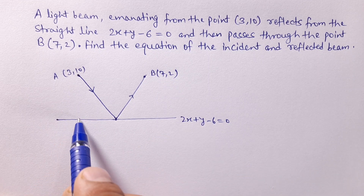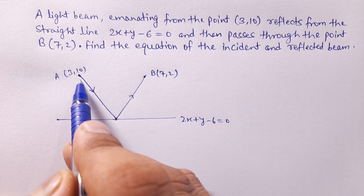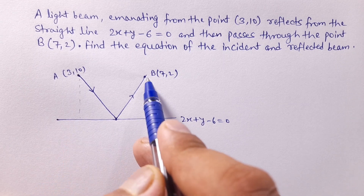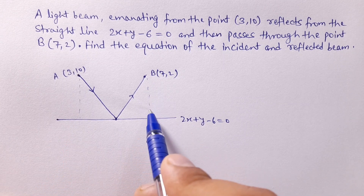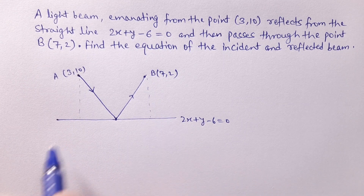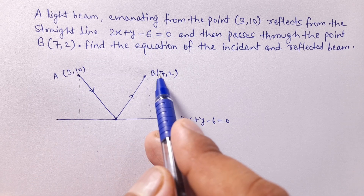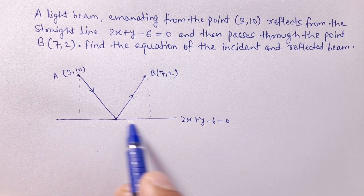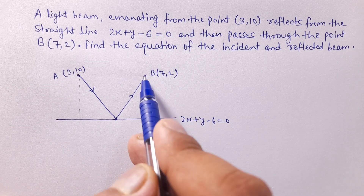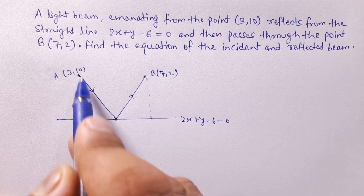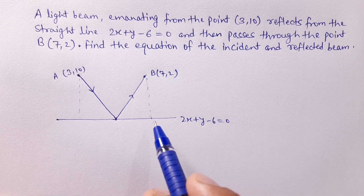The perpendicular distance from point A(3,10) to the line mirror, and the perpendicular distance from point B(7,2) to the line mirror — both are the same. That means both points are at equal distance from the line mirror — this distance and this distance are both the same.